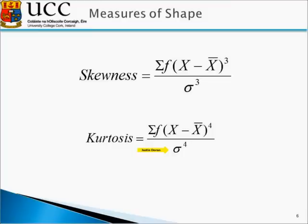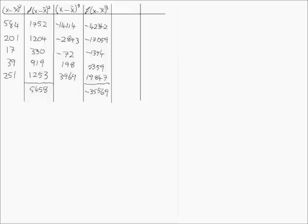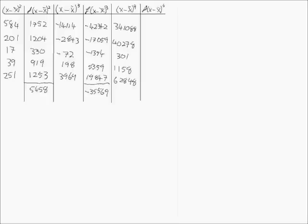The next step is our kurtosis measure. We note that we again perform a similar calculation, getting the sum of f times x minus x-bar to the power of 4. So we need to open up a new column for x minus x-bar to the power of 4. The first value we get is 341,088, followed by 402,78. As we work down the column, we know that when we put something to the power of 4, all our negative values have disappeared. Once we calculate (x minus x-bar)⁴, we need to calculate f times (x minus x-bar)⁴, simply multiplying again by our actual frequency.